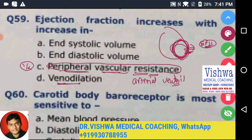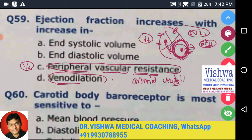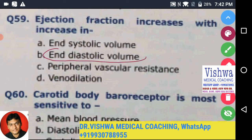What about venous dilation? If all the veins in the body dilate, think about what happens — less blood will come into the superior and inferior vena cava, so less blood reaches the right ventricle, then less to the left atrium, then less to the left ventricle, and ultimately the stroke volume will decrease. So venous dilation also does not increase ejection fraction.